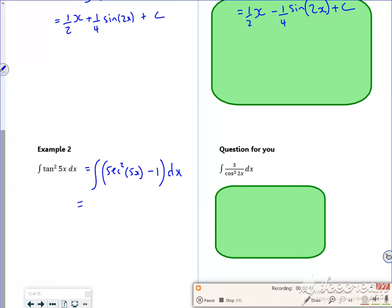And I know that secant squared goes back to tan. So it's tan of 5x. Differentiate the 5x, stick it at the front and bottom, and then minus x plus c. There.